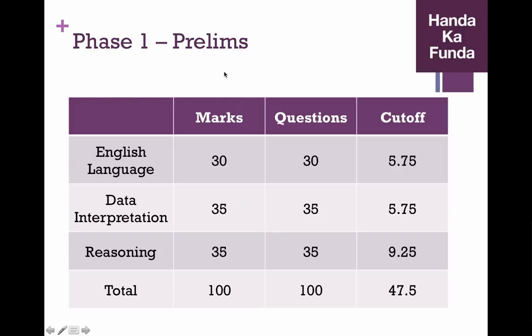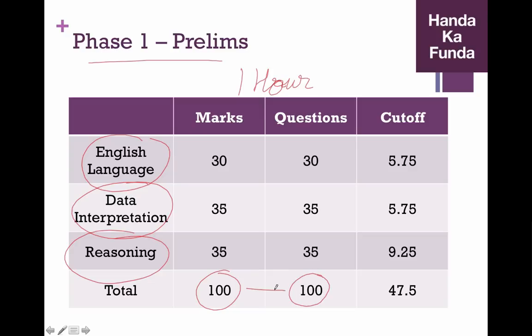Phase 1, the prelims part of the exam that will be conducted in early July, will consist of three sections: English language, data interpretation and reasoning. It's quite similar to last year. This will be a one-hour exam. So you will have one hour to go through 100 questions for 100 marks.